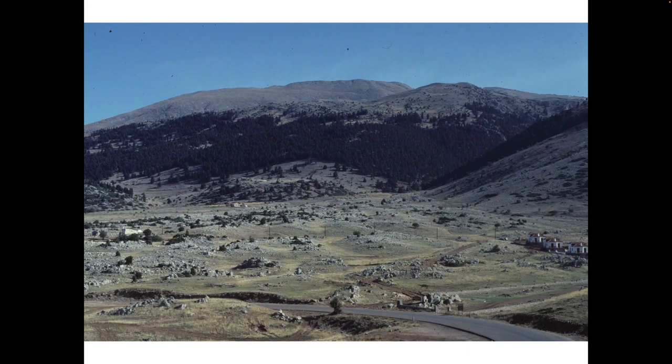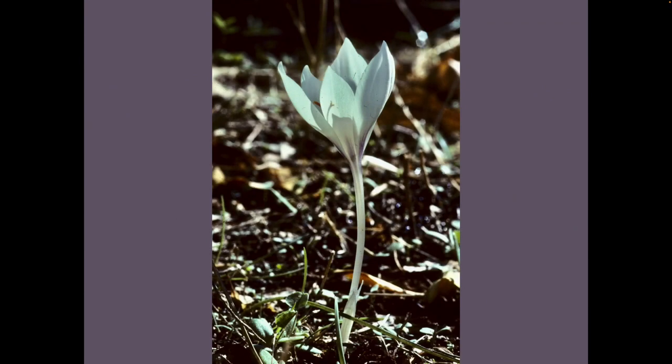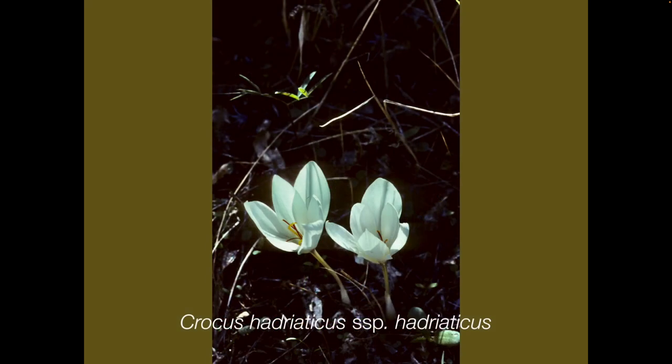You've heard of autumn crocuses, which are in fact colchicums as you may know. However, there are many actual crocuses that flower in the autumn. This is Crocus hadriaticus subspecies hadriaticus — a very beautiful little plant, but not one that is readily available commercially unfortunately. There are other species, however, that are available, so do look out for them. If you're paying attention you would have noticed the Sternbergia had six stamens, whereas the crocus has three. It's in a different family: Iridaceae, the iris family.